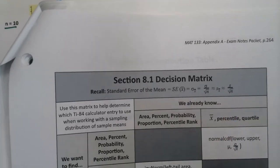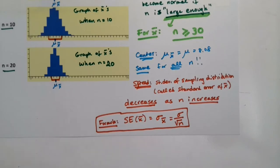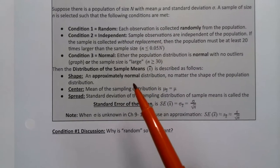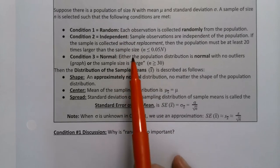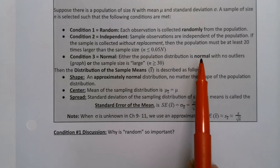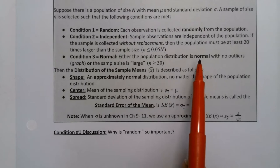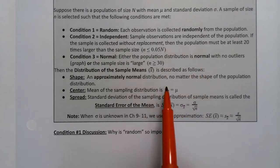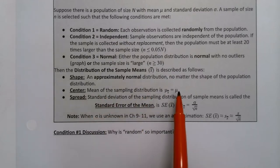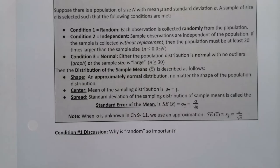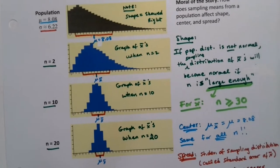We've just learned the important parts of the central limit theorem: if n is large enough — n greater than or equal to 30 — the sampling distribution becomes normal; the center is always mu; and the standard deviation follows the formula sigma over the square root of n. Let me prove to you that it shrinks. For all three sample sizes, mu sub X-bar is 8.08. Now let's compute the standard error for each.